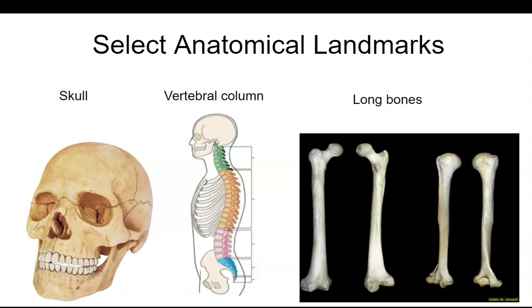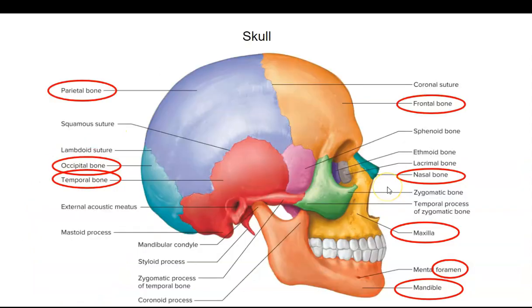There are thousands of anatomical landmarks. I've got about 50 of them that I'd like you to learn. I chose these because many of them are of clinical significance. So let's look at the skull first, then we'll look at the vertebral column, and then we'll look at some of the long bones.